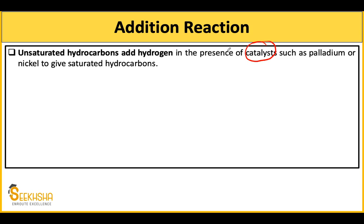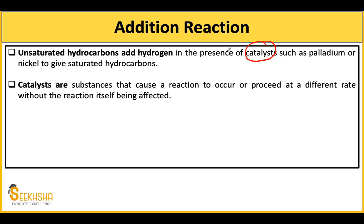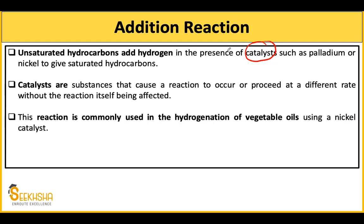In this addition reaction, hydrogen is added to unsaturated hydrocarbons in the presence of a catalyst. Catalysts are substances that change the speed of a reaction. Nickel is used as a catalyst here in hydrogenation of vegetable oils, where hydrogen is added to unsaturated hydrocarbons and in the presence of the catalyst, saturated hydrocarbons are produced.